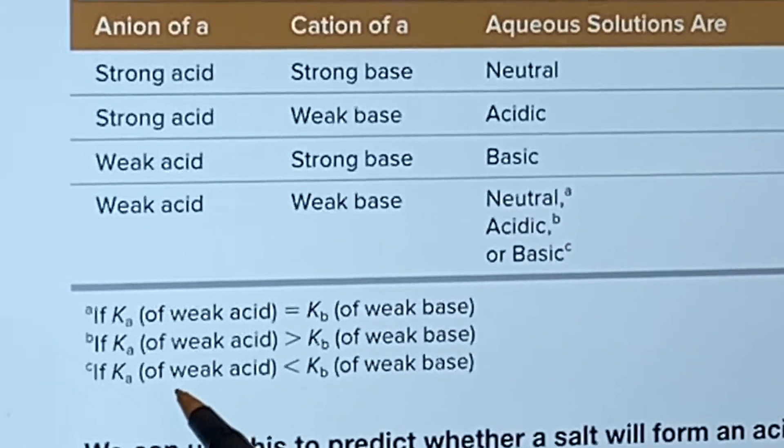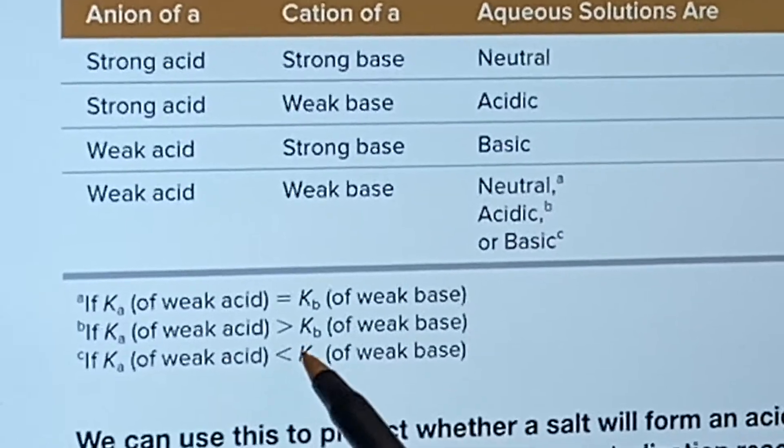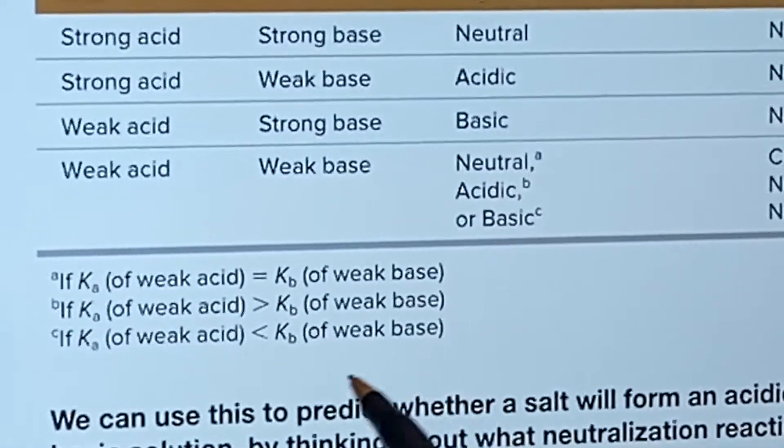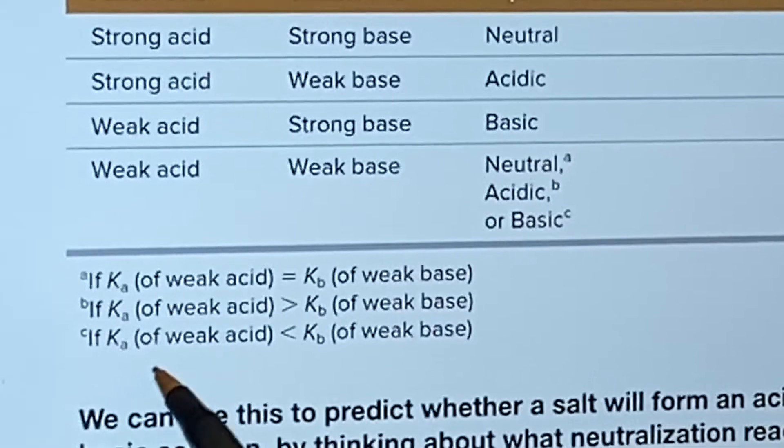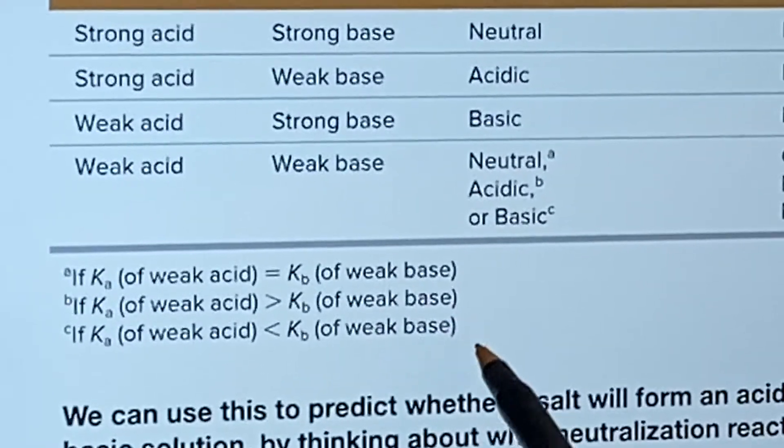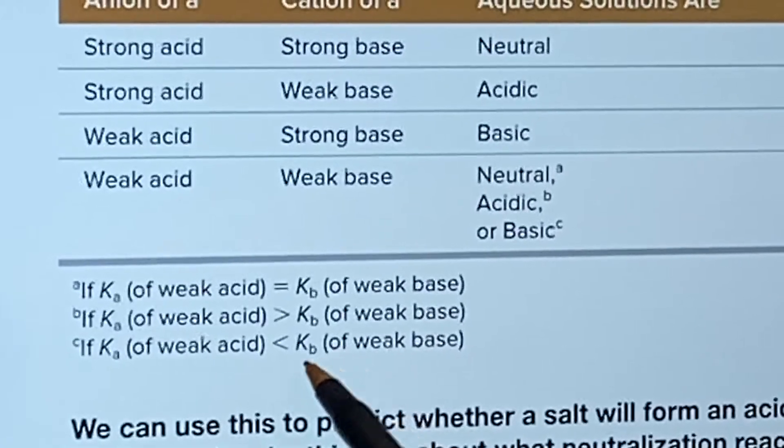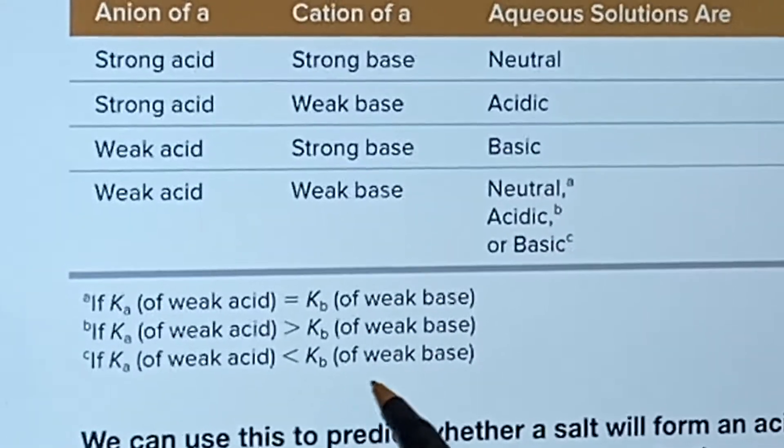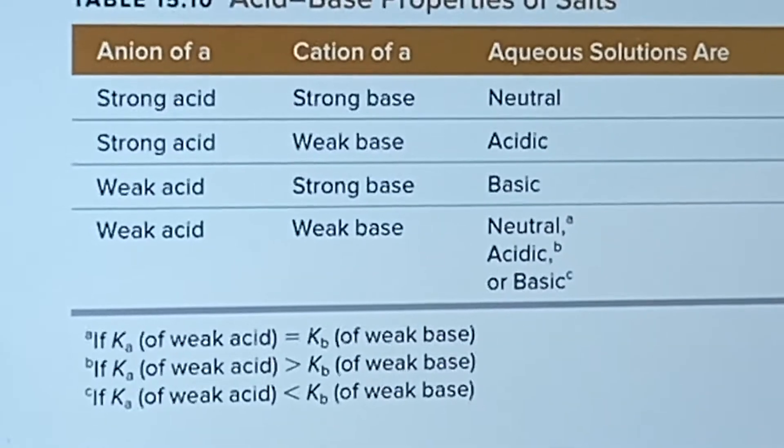And the last case, if the Ka of the weak acid is less than the Kb of the weak base, that means this one is stronger. The Kb is stronger. The base is stronger. We're going to end up with a basic situation.